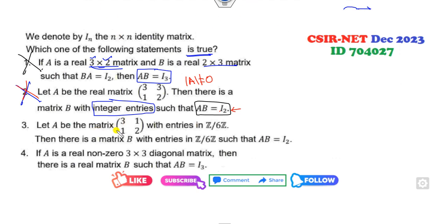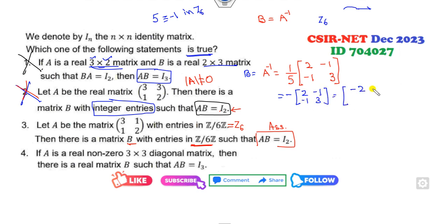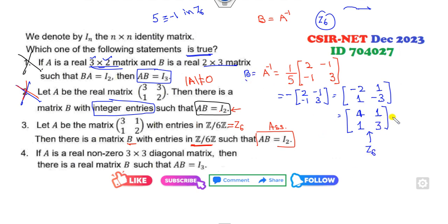Look at the third option. A is over Z₆ and the condition AB = I is to hold, with B also in Z₆. Again B = A inverse. A inverse = (1/6) × [[-1, 5], [2, -1]] with entries -2, 1, -3. In Z₆: 5 is written as -1 in Z₆, so this number is -1. Opening the bracket: -2, +1, -3. In Z₆: -2 is equivalent to 4, 1 is already 1, -3 is equivalent to 3. All elements are in Z₆, so there exists a matrix B such that AB = I. This is the correct answer.